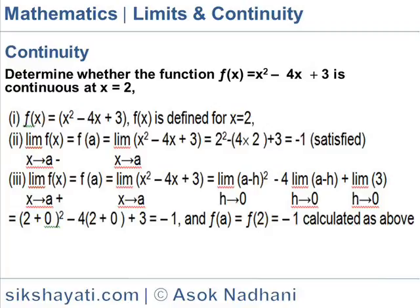(ii) lim f(x) as x→a = f(a) = lim (x² - 4x + 3) = 2² - 4(2) + 3 = -1 (satisfied)